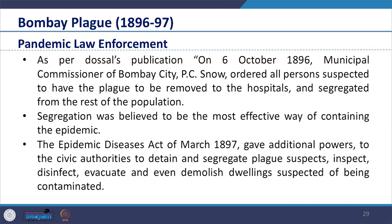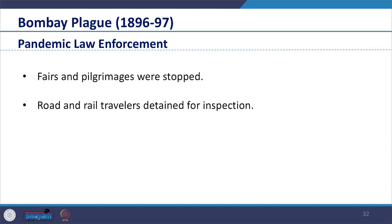The Epidemic Diseases Act of March 1897 gave additional powers to civic authorities to detain and segregate plague suspects, inspect, disinfect, evacuate and even demolish dwellings suspected of being contaminated. Fares and pilgrimages were stopped and road and rail travellers detained for inspection. In short, government officials were empowered to act decisively and contain the disease. We see different actions were taken which also involved power distribution and political willingness.